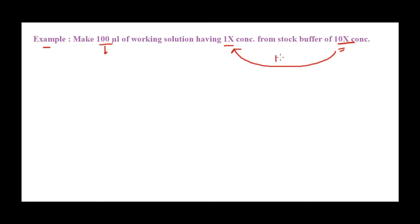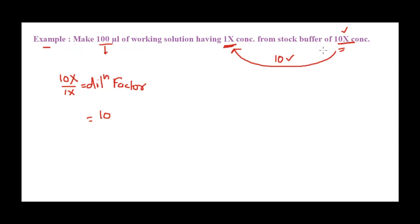For numbers that aren't as easy to work with, you can get the dilution factor by taking your stock concentration — which is 10x — divided by the final concentration you need. This step gives you the dilution factor. Here it will be 10. So the dilution factor equals stock concentration divided by final concentration, meaning I need to dilute my stock 10-fold to get my desired concentration.